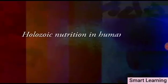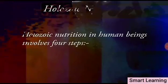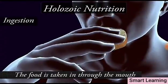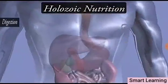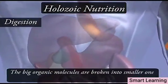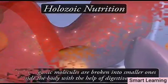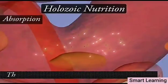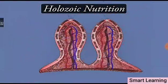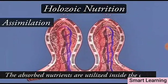Holozoic nutrition in human beings involves four steps. First, ingestion — when the food is taken in through the mouth. Second, digestion — when the big organic molecules are broken into smaller ones inside the body with the help of the digestive system. Third, absorption — when the simple molecules are absorbed into the cells. Fourth, assimilation.